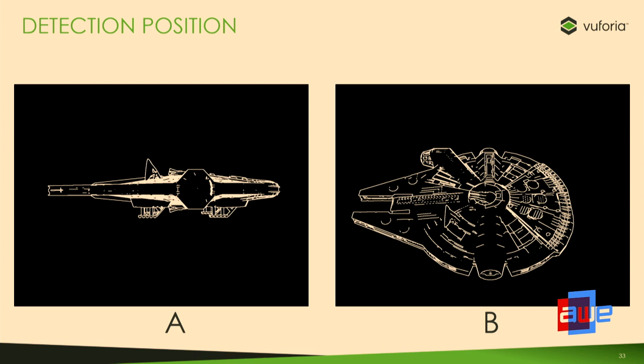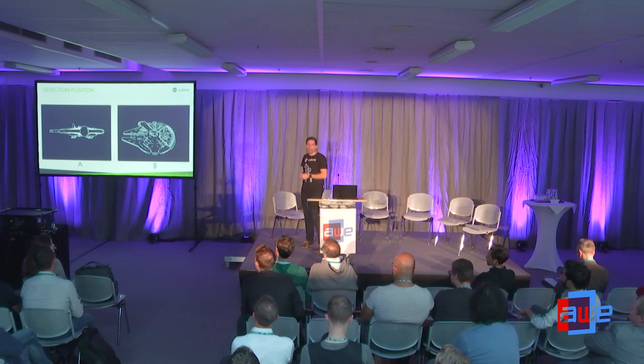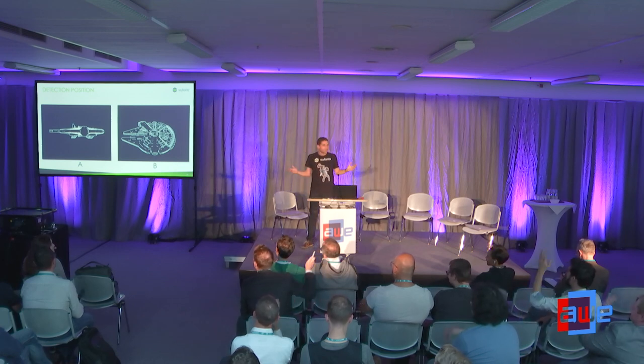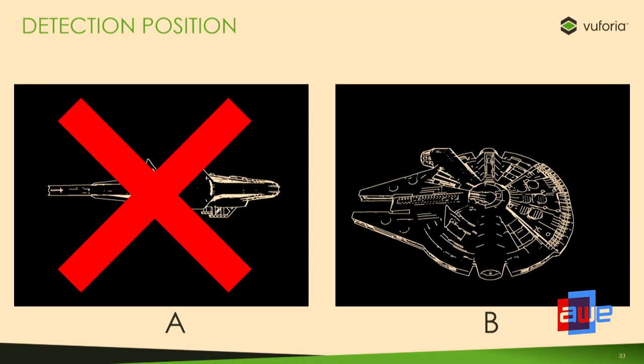Here we have two different approaches to the Millennium Falcon model for a guide view — A and B. Which makes a better guide view? The answer is B. Not only do we get a three-quarters view, but there's also a lot of visual detail there for us to work with.